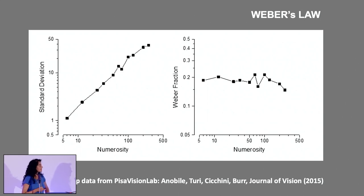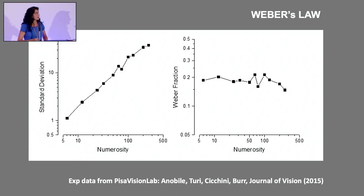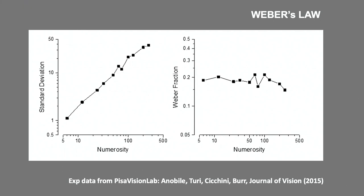Going to an experiment done in Concetta's lab: if you subject a number of people to items and ask them to estimate the count, what is seen is that the uncertainty grows roughly linearly as a function of the number. So if we take the ratio — the relative uncertainty — it is constant between 5 and 500. This is quite peculiar, because neurons fire in a Poissonian manner, yet our visual system does this remarkably efficiently.